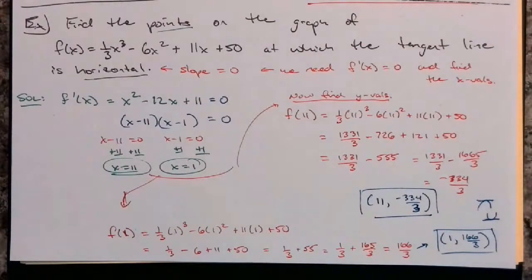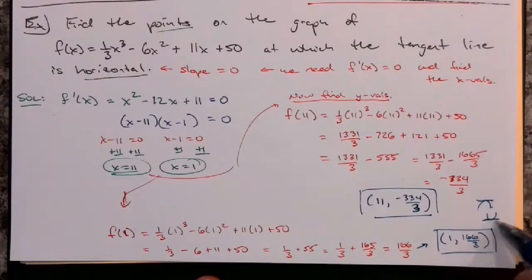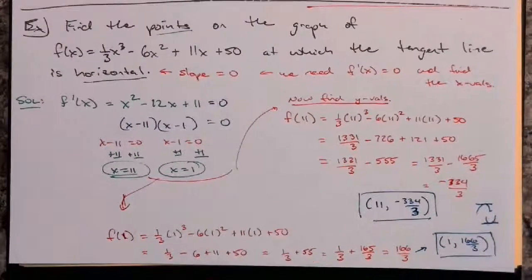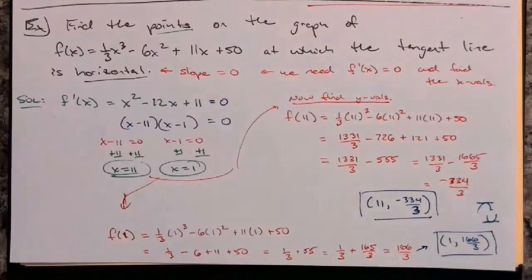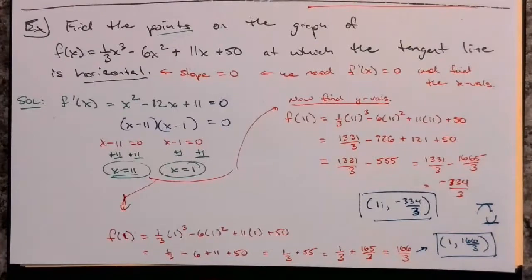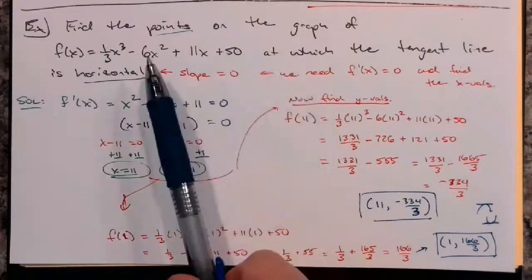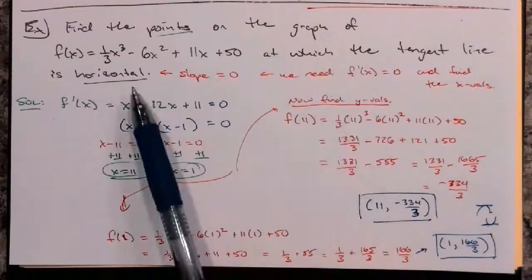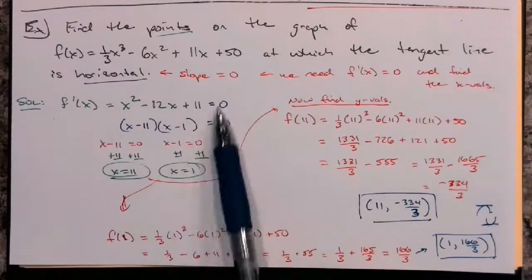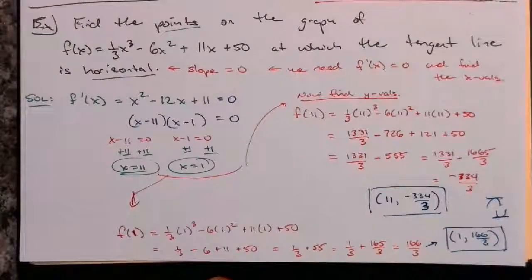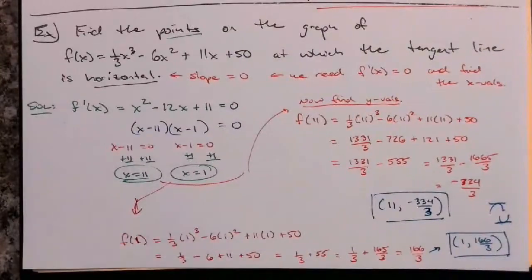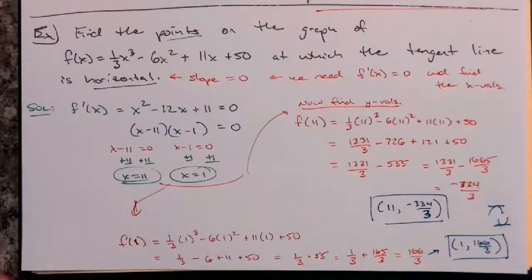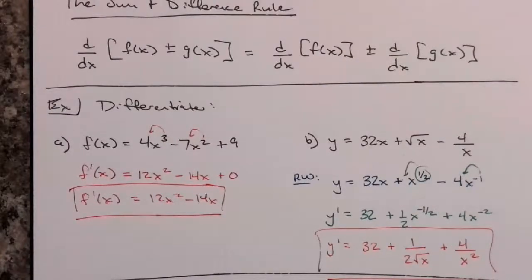Later on, we'll learn that this is how we can find minimums or maximums of the graph, because the horizontal tangent line means it's touching and going up to it, or touching and going down to it. Also, if a question asks for points where the tangent line has a slope of 5 instead of 0, you'd set f′(x) = 5 and solve that equation. The sum and difference rule really comes down to taking derivatives term by term.